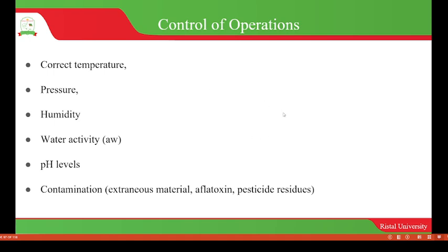The other area covered under good hygienic practices is the control of operations. When controlling operations, there are parameters we take into consideration. These parameters include correct temperature, pressure, humidity, water activity, and pH level, because these are parameters which influence the growth and multiplication of microorganisms that are hazardous in food.